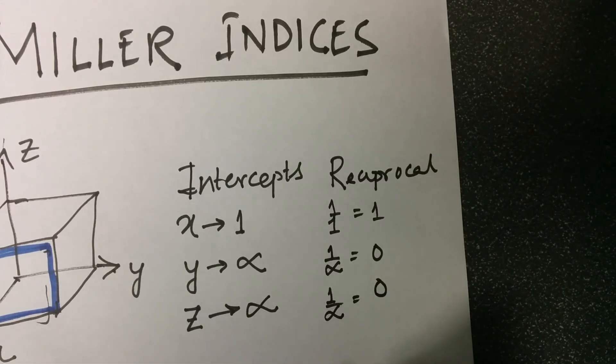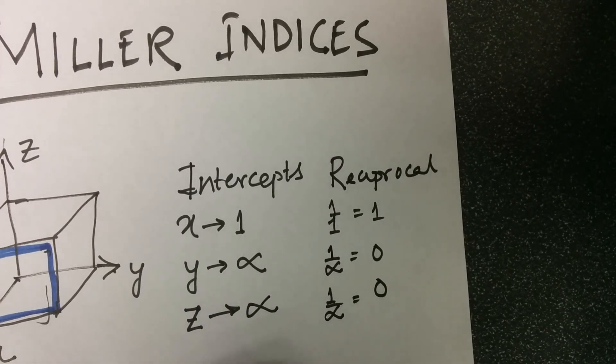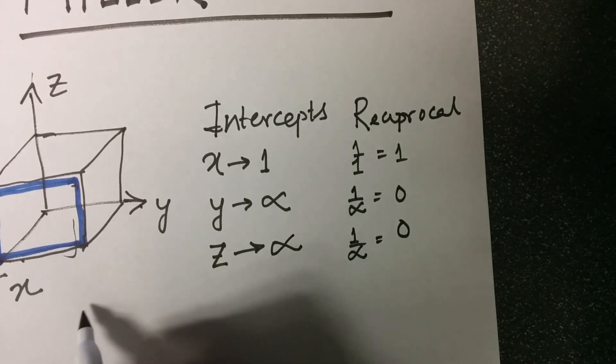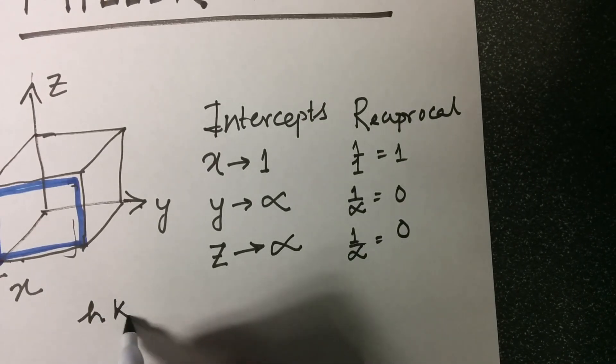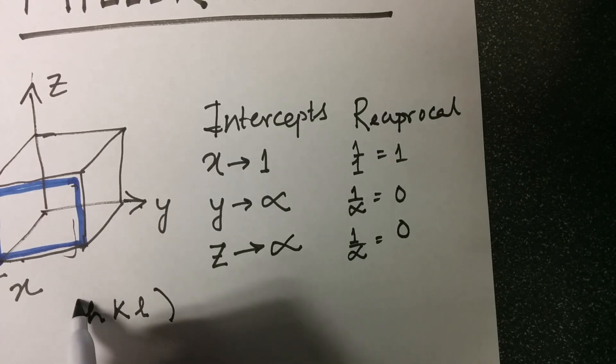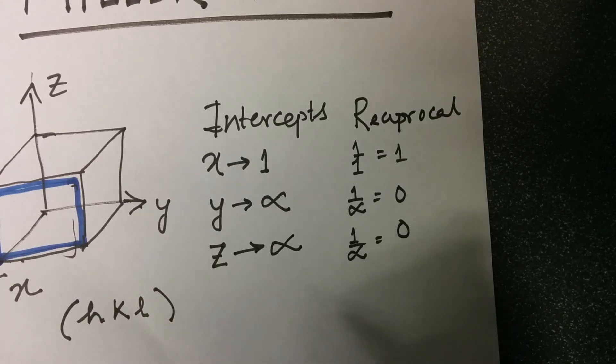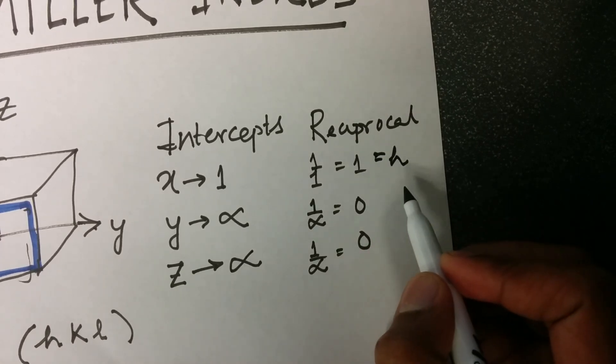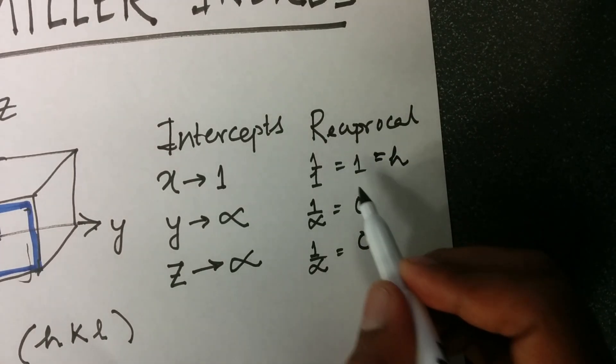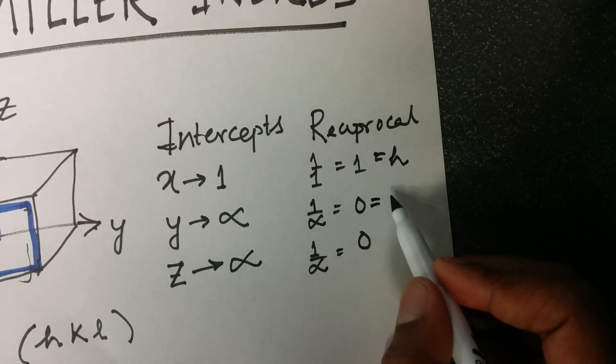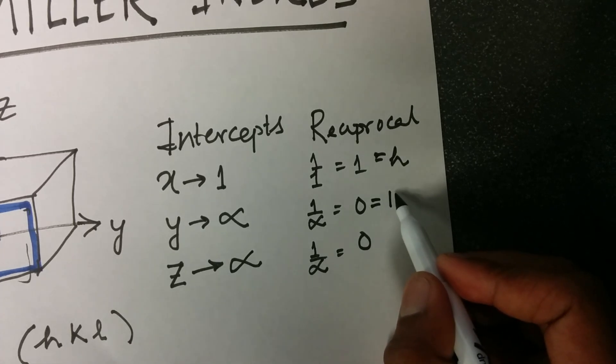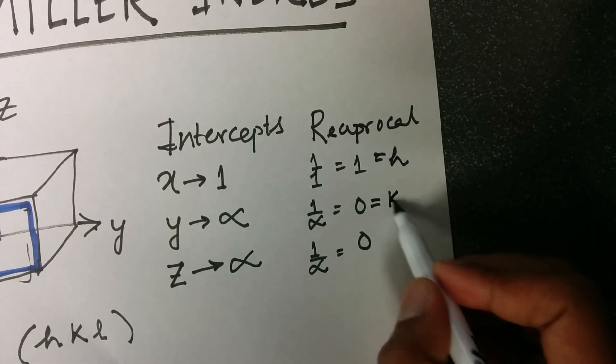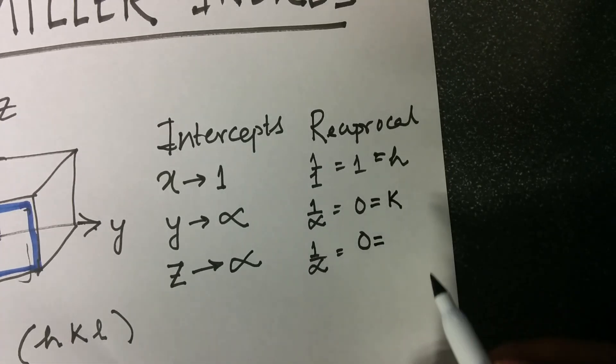Hence, Miller indices, which are denoted as (h k l) within parenthesis, where h refers to this number, the reciprocal of intercept on x-axis, k refers to the reciprocal of the intercept on y-axis, and l represents the reciprocal of intercept on z-axis.